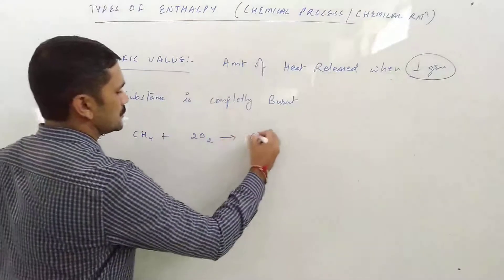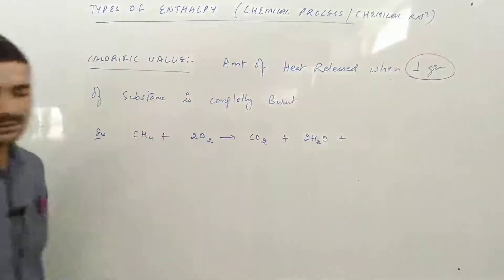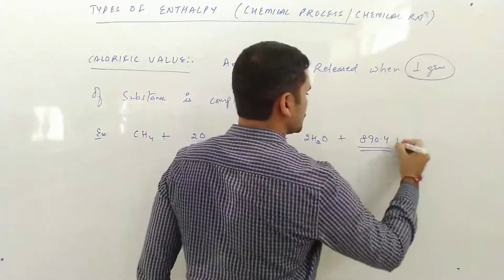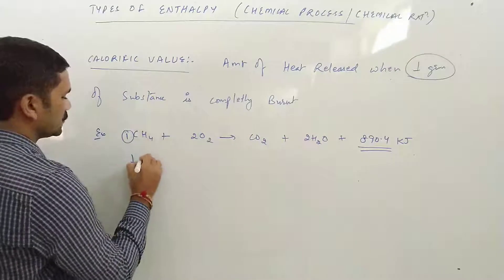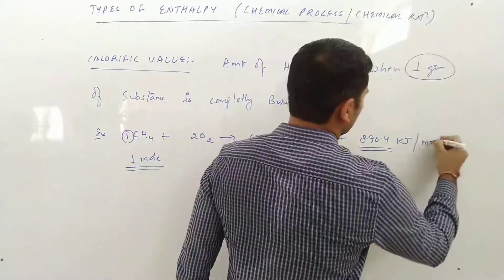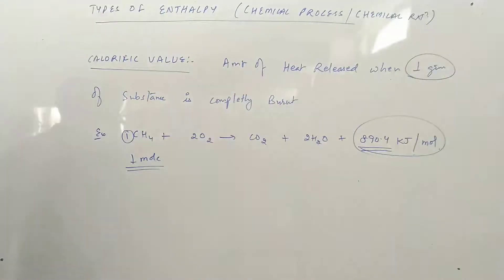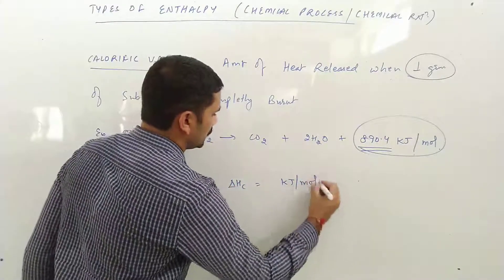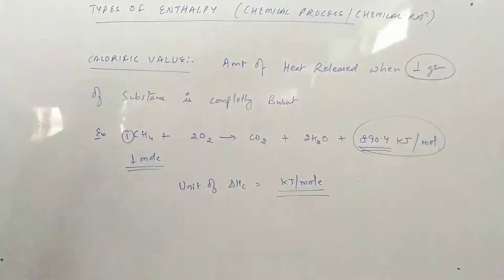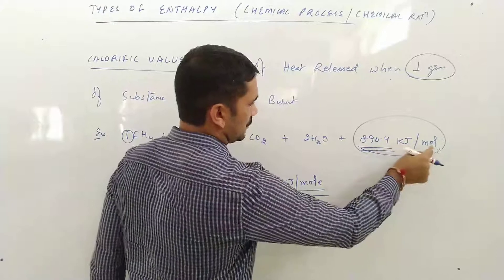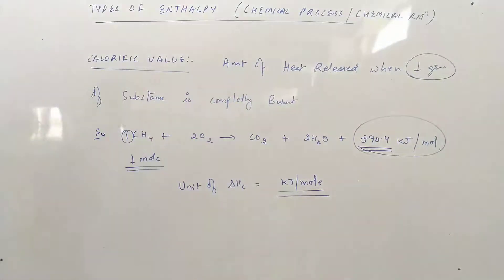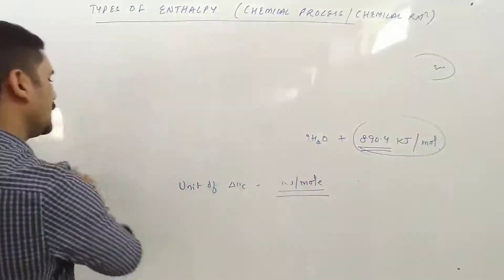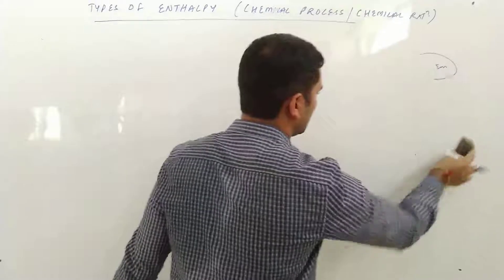Example: jab methane ko jalate hain — CH₄ + 2O₂ → CO₂ + 2H₂O, aur ye release karta hai energy 890.4 kJ per mole. Itni energy produced ki isne, kab? Jab iska 1 mole liya gaya tha. Unit of delta H_C kya rahega? Kilojoule per mole — per mole isliye ki 1 mole substance jalaya tha, kilojoule energy ki unit hai. To ye hogi hamari first type of enthalpy on the basis of combustion reaction — jab bhi kisi cheez ko jalate hain tab jo heat produced hoti hai, that is called enthalpy of combustion.